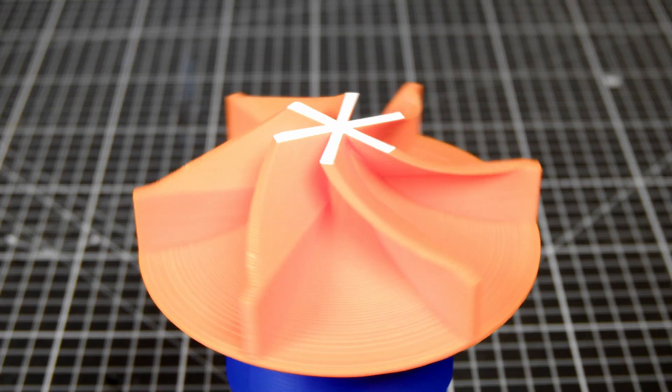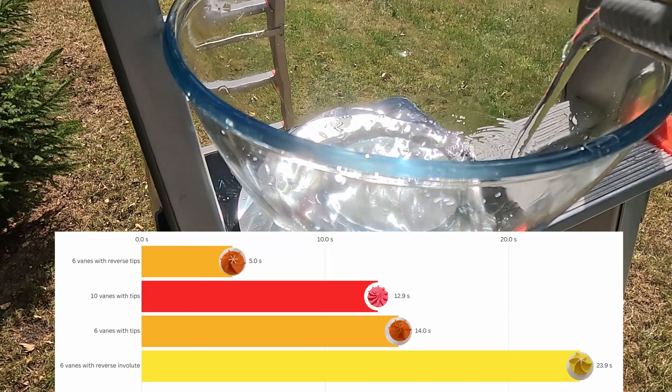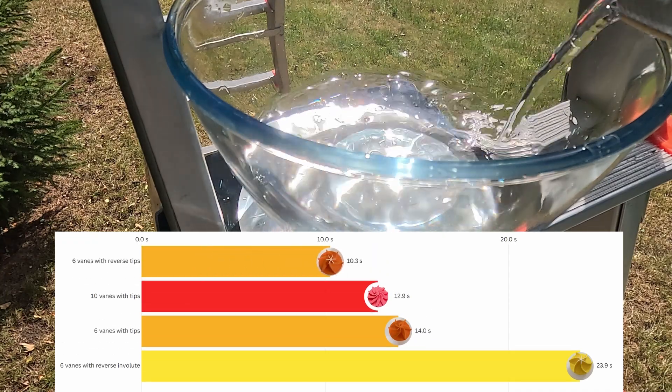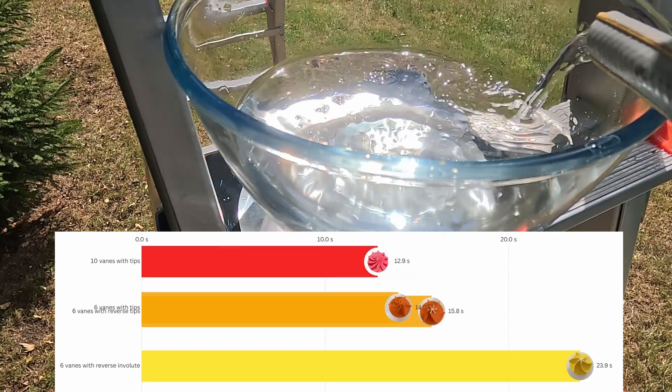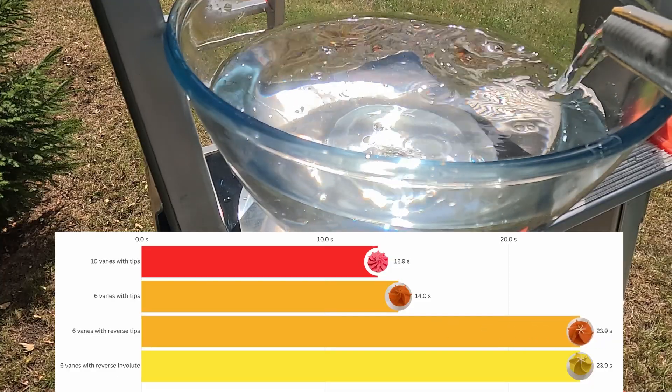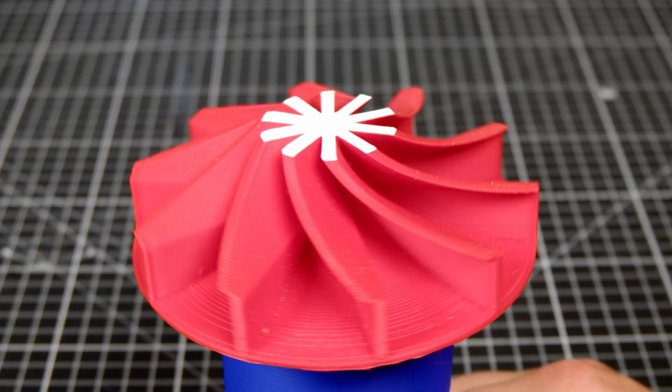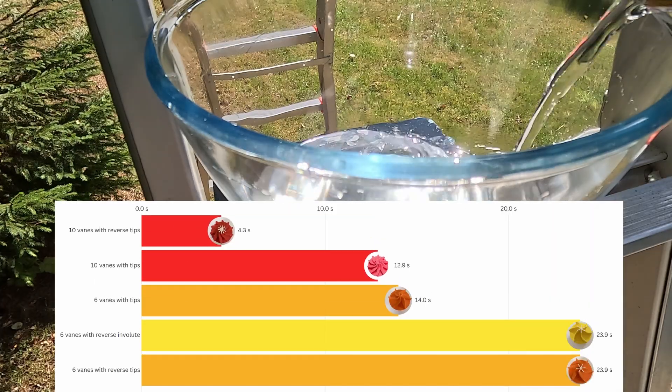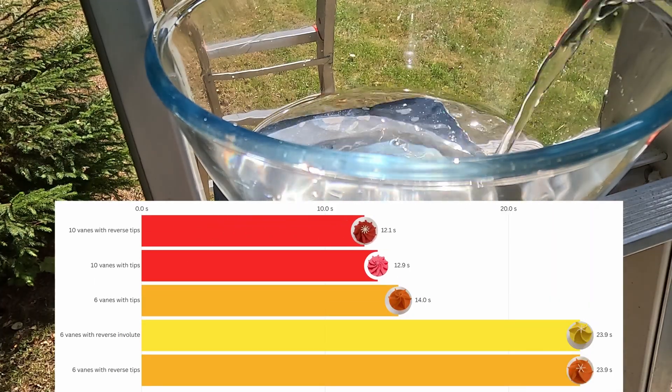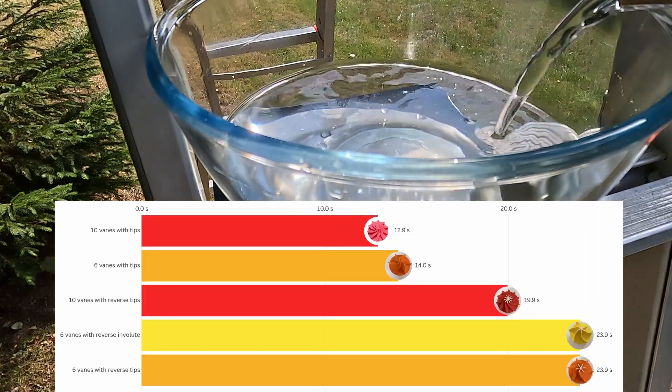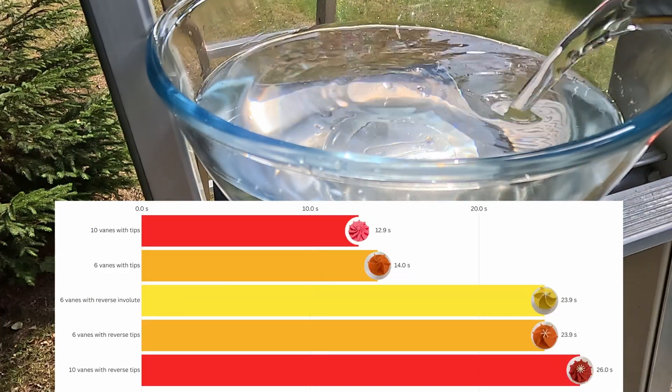How about if we reverse the tip on the orange impeller? Well, it's working again, which is good. It's still quite slow. Wow. It's exactly the same as the yellow and white. Lastly, the red impeller with the reverse tips. It's pumping, but it's really slow. 26 seconds.